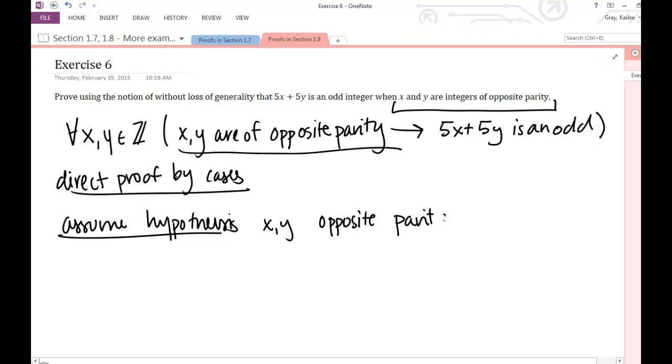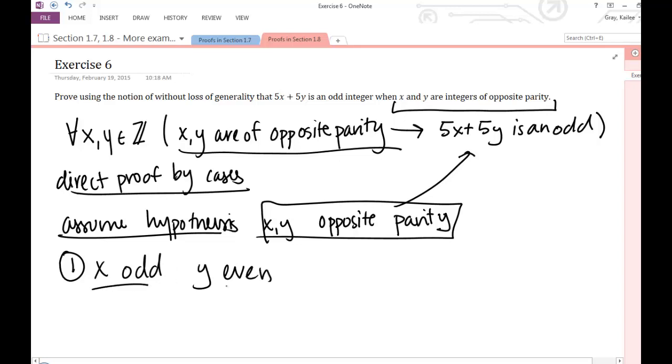The reason is I want you to see how similar they are and why we have the ability here to use without loss of generality. So we're going to use this assumption that x and y are of opposite parity to show that this expression is an odd integer. So let's just see what cases we have. We really have two cases. We could have x odd and y even.